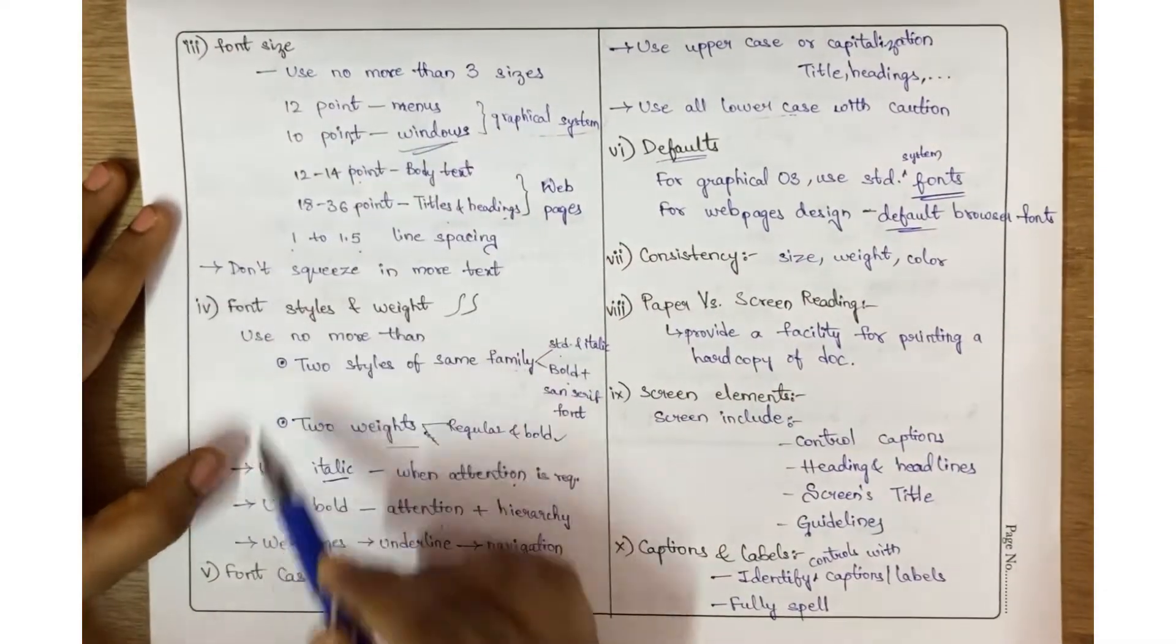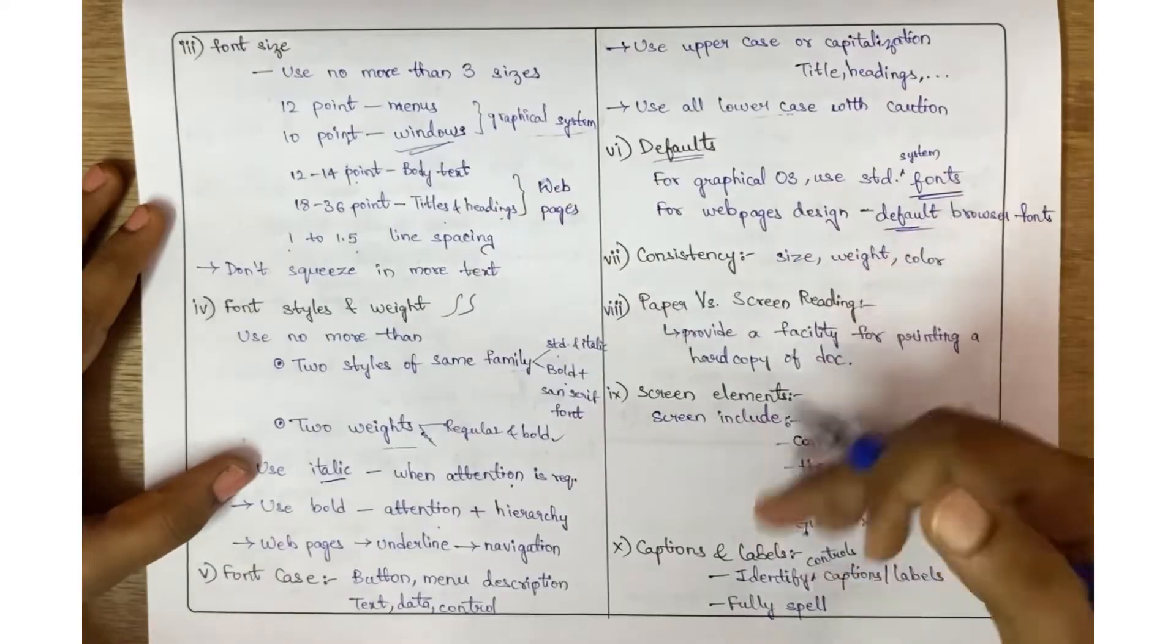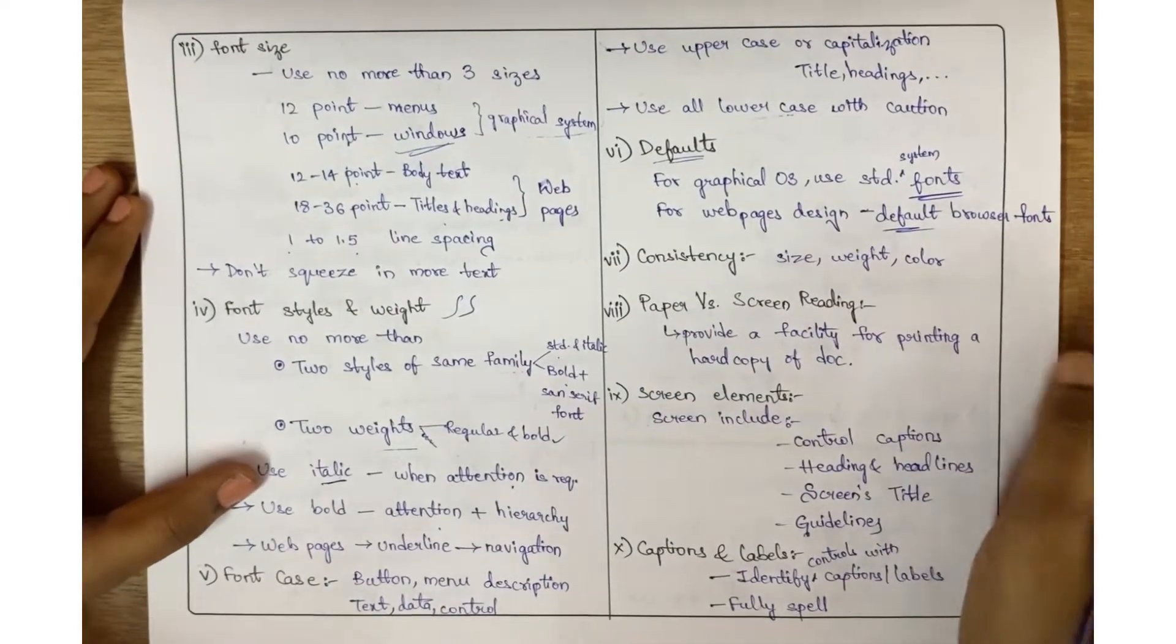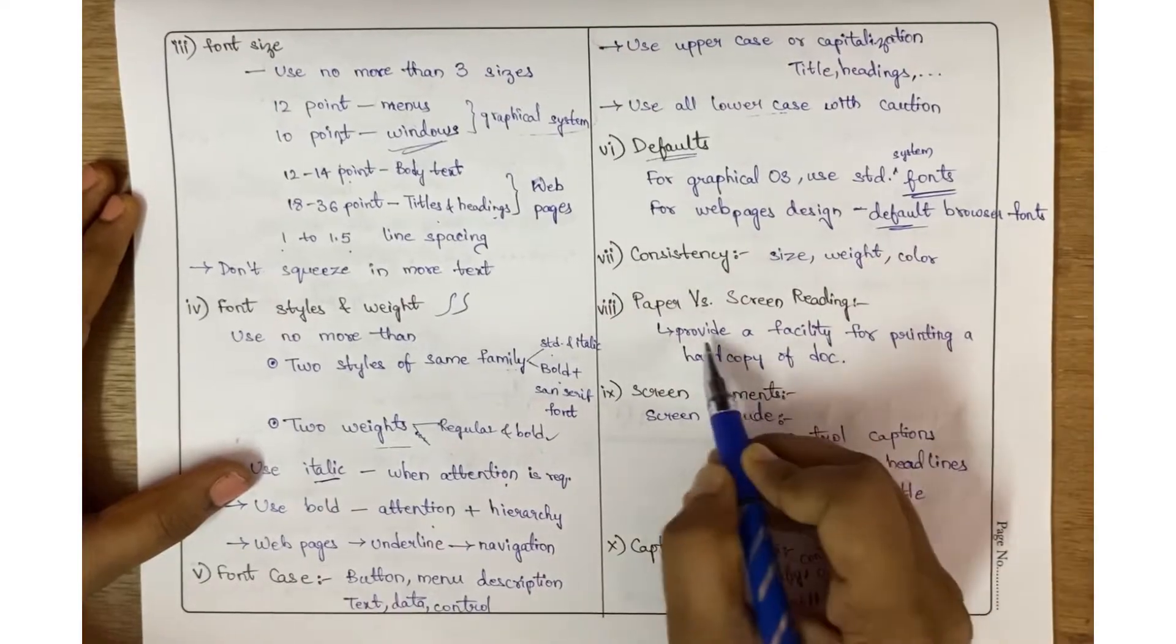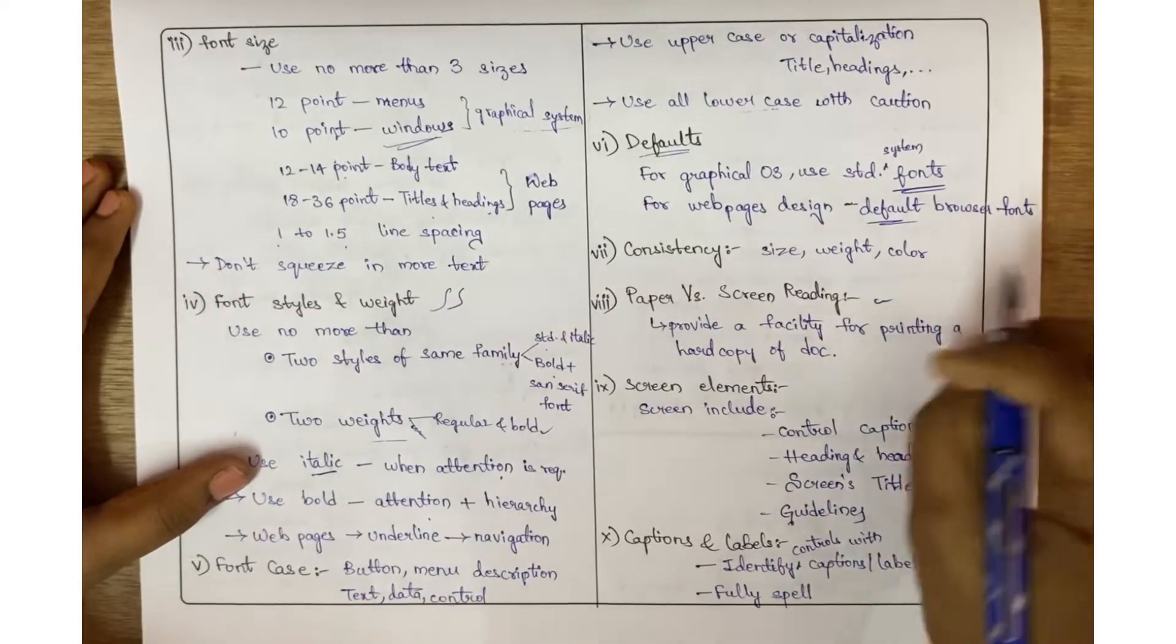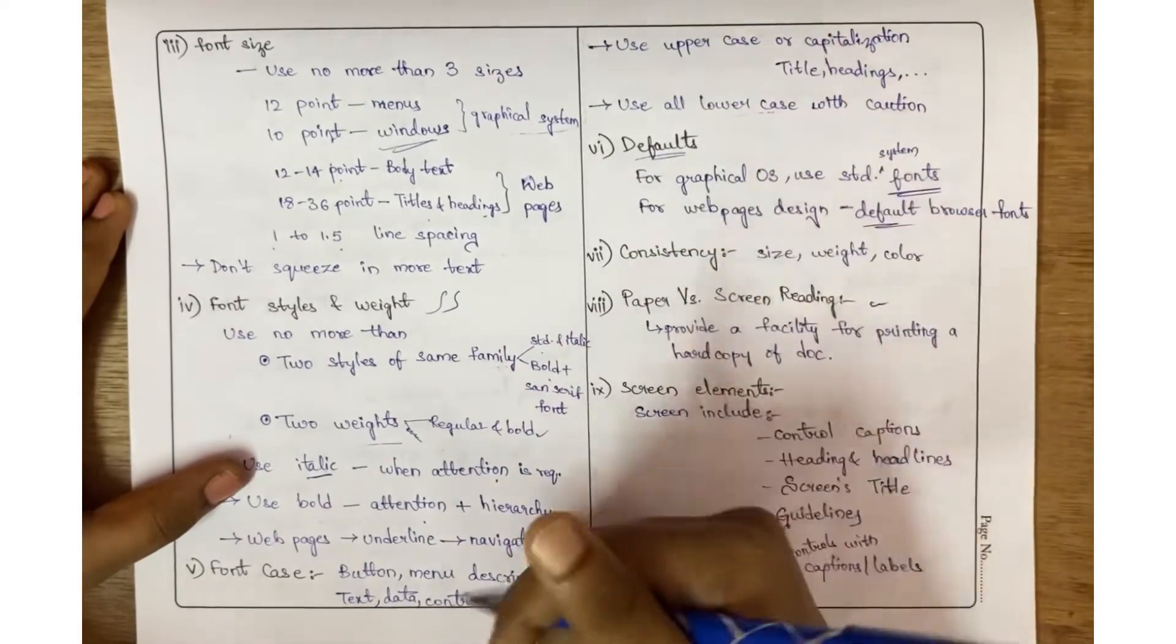For consistency, use the same size, same weight, and color. Here I'm using for all the headings black color and content blue color, meaning I'm maintaining consistency. Coming to paper versus screen reading, we are habituated for screen reading, so provide a facility for printing a hard copy of the document.